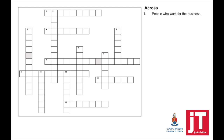So the first question: people who work for the business. People who work for the business are called employees. Question number four: a cash register is classified as a current asset.